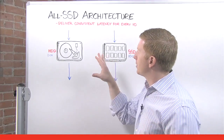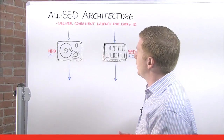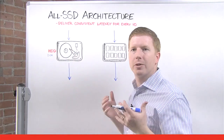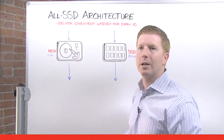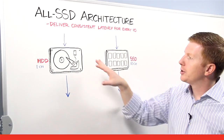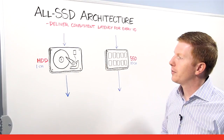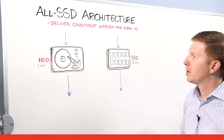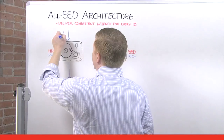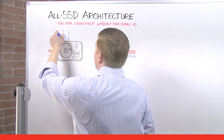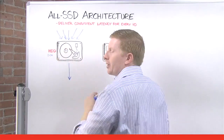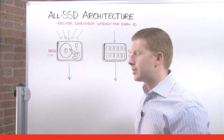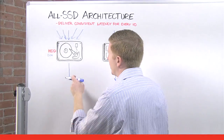First of all, it comes down to the simple physics of spinning disk. With a hard drive, you've got a single read/write head, which means you can serve at most a single I/O at a time. That I/O is going to be served with different latency depending on how much that head has to move. When you've got multiple I/Os coming in at the same time, they're going to stack up behind each other waiting to be serviced. The result is highly variable latency.